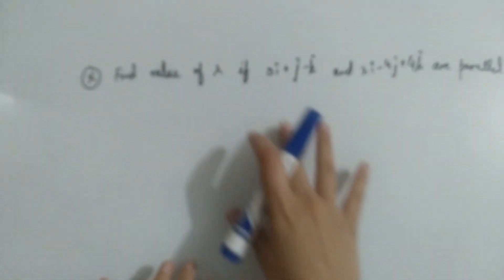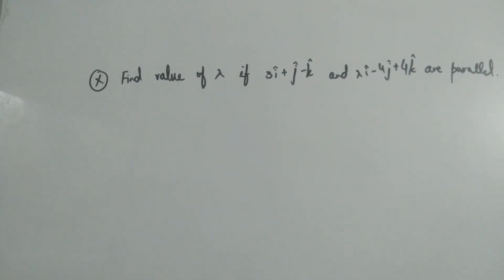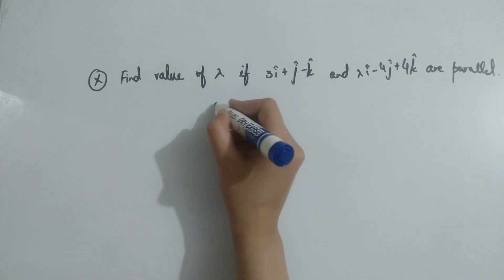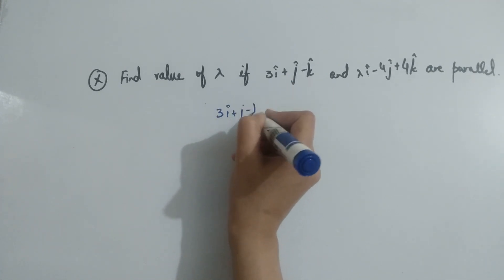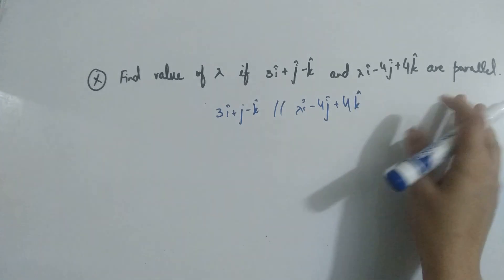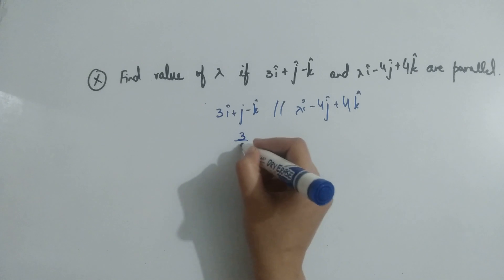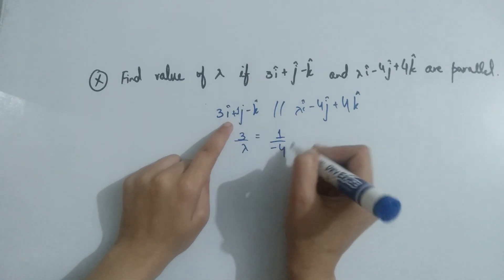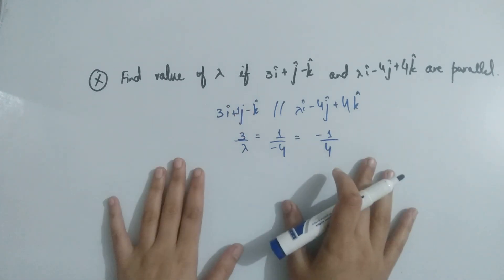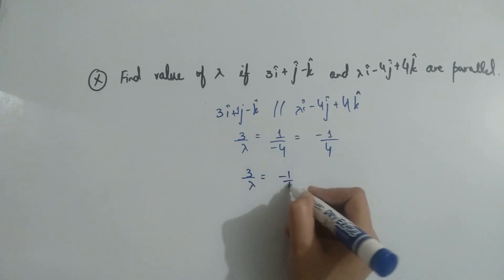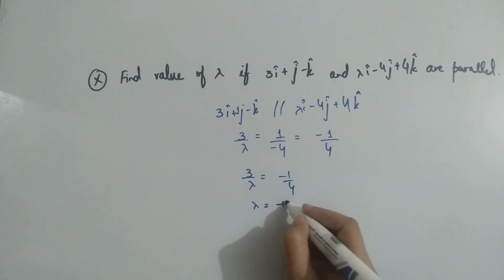Question number 10: you have to find the value of lambda, if these two vectors are parallel. According to the condition of parallel vectors, these two should be scalar multiples of each other, or the ratio of their coefficients will be equal. So, given that 3i plus j minus k is parallel to lambda i minus 4j plus 4k, the ratio of their coefficients must be the same: 3 over lambda equals 1 over minus 4 equals minus 1 over 4. Solving, we get lambda equals minus 12. This is so simple.